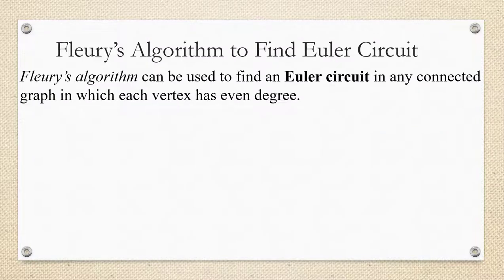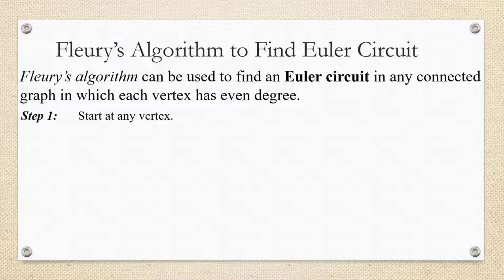Now we're going to look at the steps or formula, the recipe, to find an Euler circuit in a graph that has Euler circuits. It's called Fleury's algorithm. It can be used in any connected graph in which each vertex has even degree because we know it'll have an Euler circuit. So step one will be just start at any vertex you want.